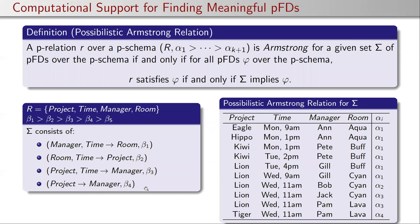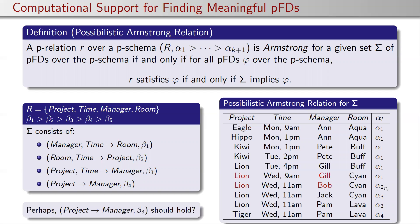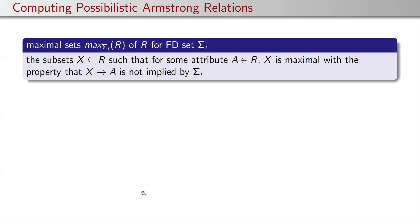This input would generate the possibilistic Armstrong relation shown here. Looking at it, project does not determine manager on tuples with possibility degree alpha 1 or alpha 2. But if we wanted that rule to hold for data at least at level alpha 2, then the rule should apply with at least certainty degree beta 3 — so this allows us to validate these rules.